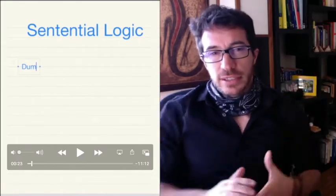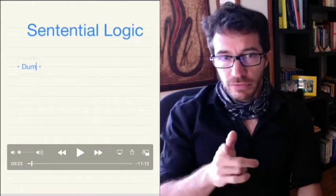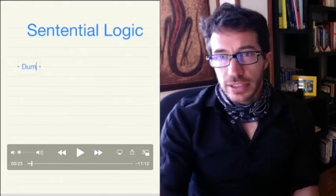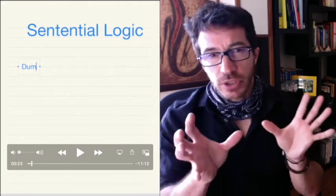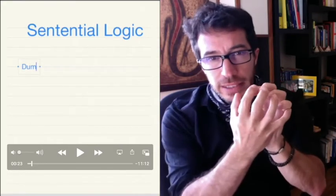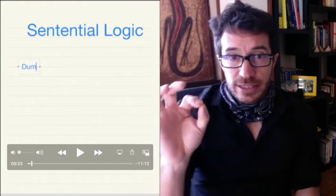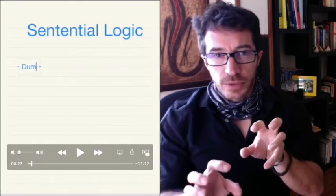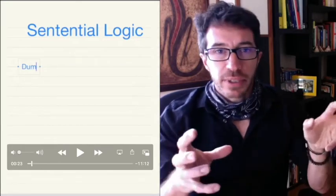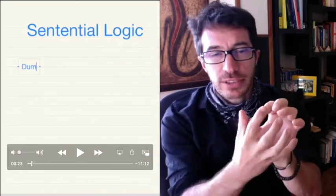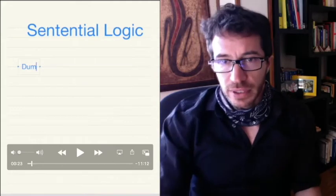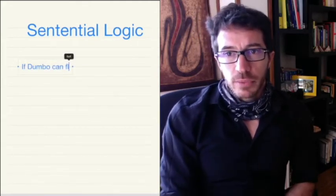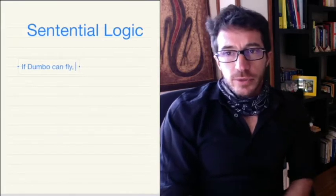If you didn't watch the video on strings, you should watch it before this. In sentential logic, it's called sentential logic because the basic building blocks for the logic are sentences, which can be either true or false. One example can be like the following sentence: if Dumbo can fly, Dumbo is pink.